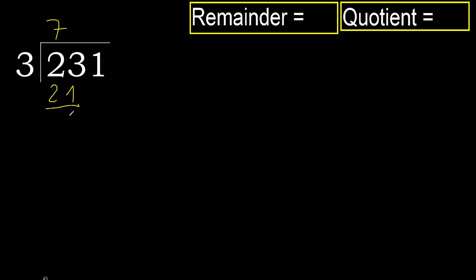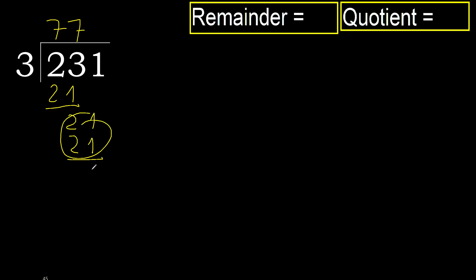Subtract: 23 minus 21 equals 2. Bring down the next digit. 3 multiplied by 7 is 21. 21 is not greater, so subtract to get 0.